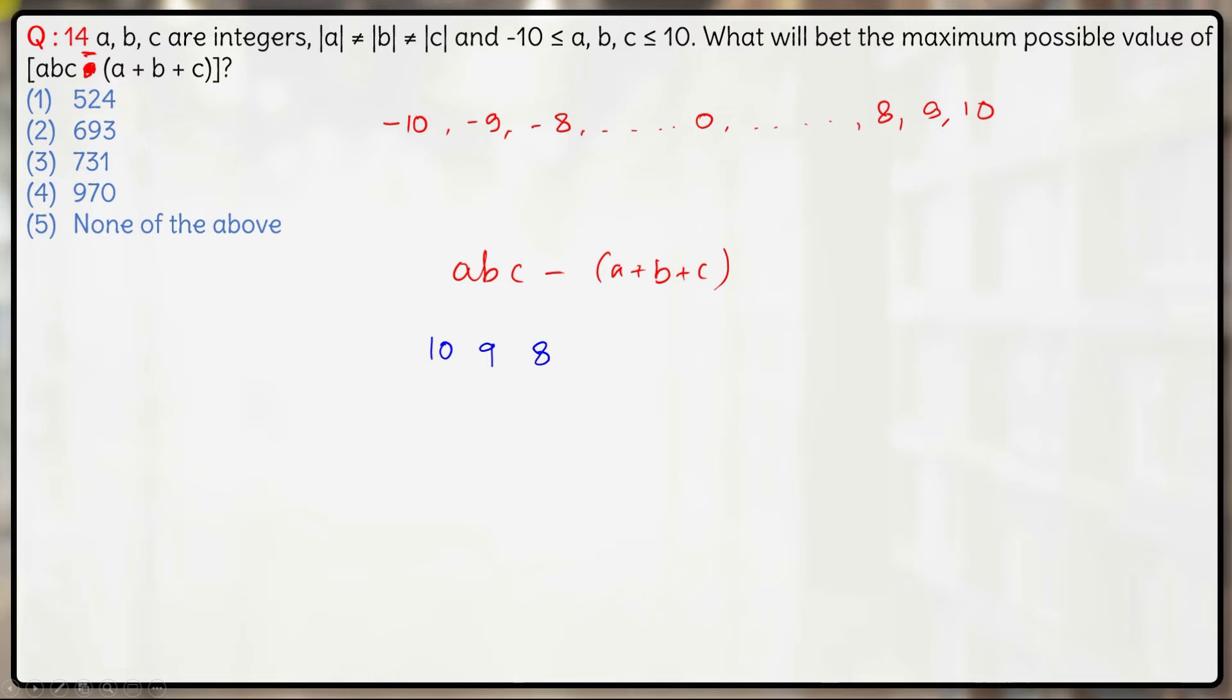Now either two of these can be negative or all three should be positive. Two negative, one positive will give you a positive multiple or all three positive is also possible. Now if all three are positive, you'll have 10 into 9 into 8 minus 10 plus 9 plus 8. This is a possibility.